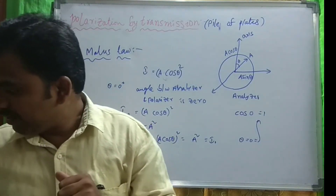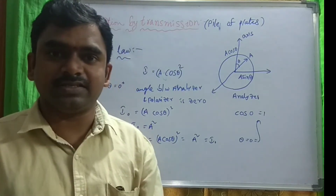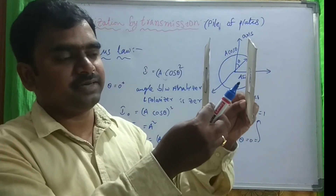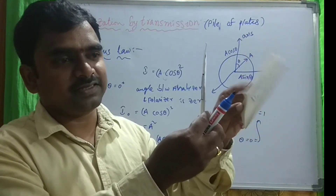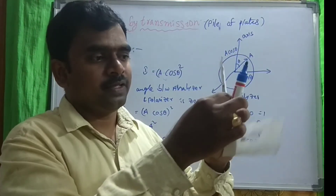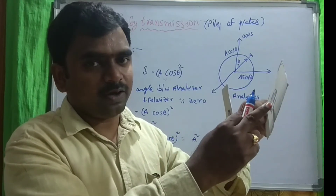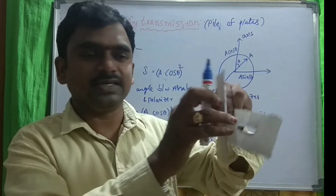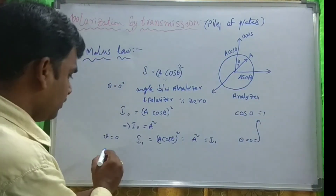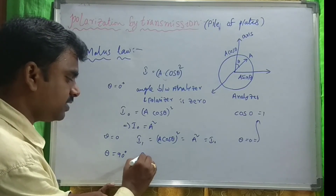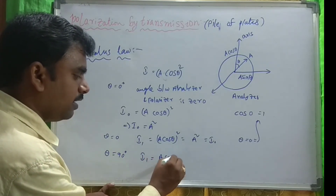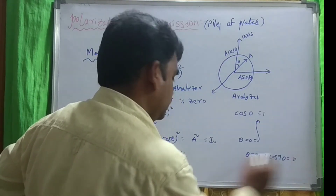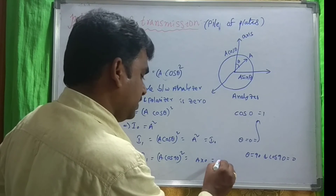For example, if the angle between those two is not 0 degrees — that means it is changing — if you are rotating the second slit, the analyzer, it is allowing only the vibrations parallel to that slit. But if you are rotating it further, will it allow? No. Whenever both are perpendicular, whatever light is passing through the polarizer, it won't pass through the analyzer. So that means when theta equals to 90 degrees, the intensity I₁ equals to A cos 90, whole squared. When theta equals to 90, cos 90 equals to 0, therefore A into 0 equals 0. So the intensity is zero.